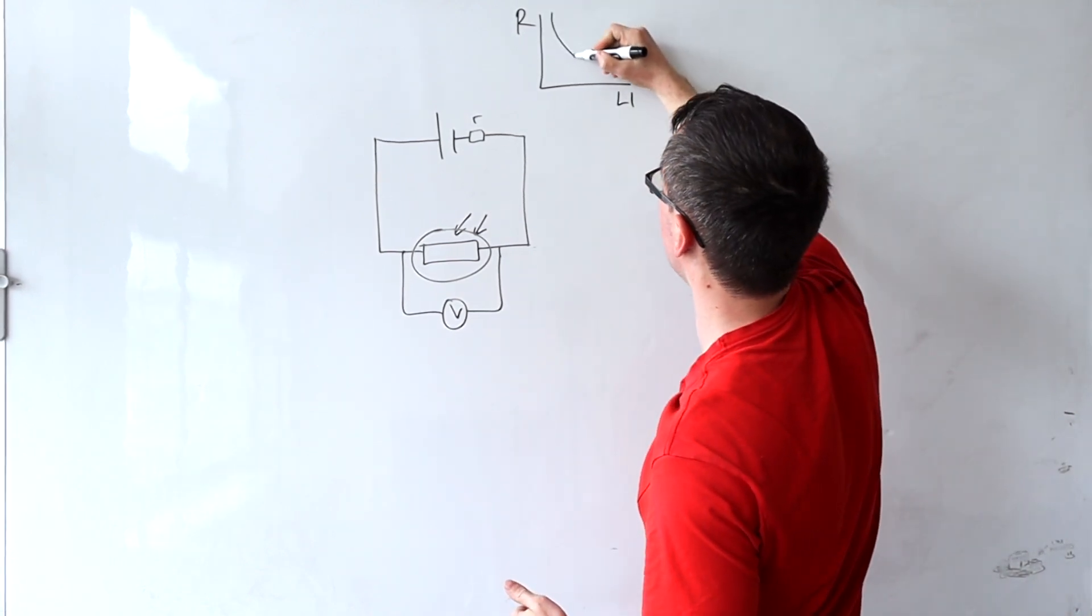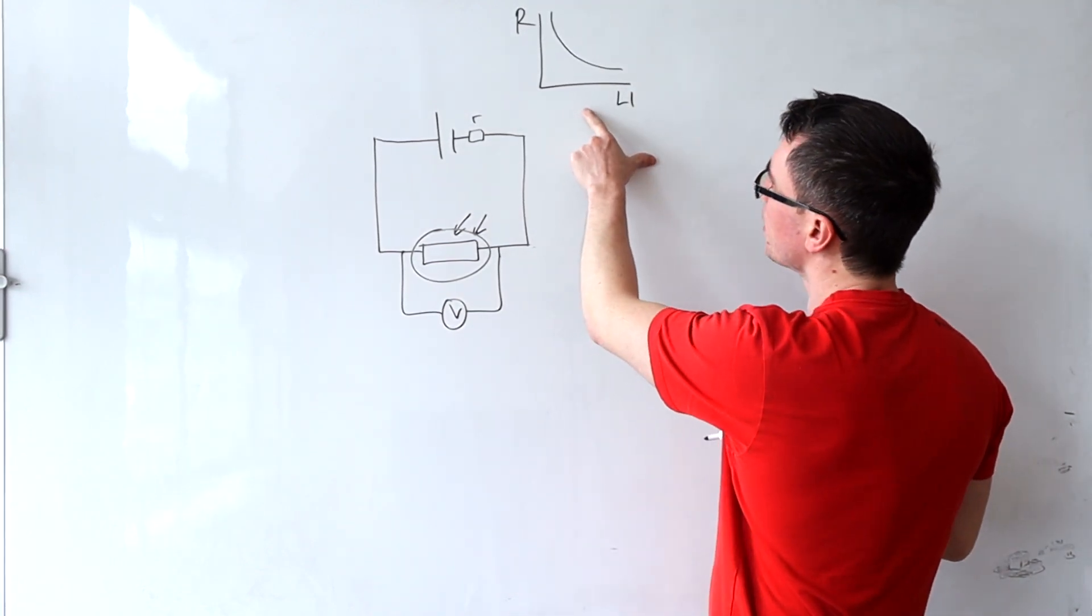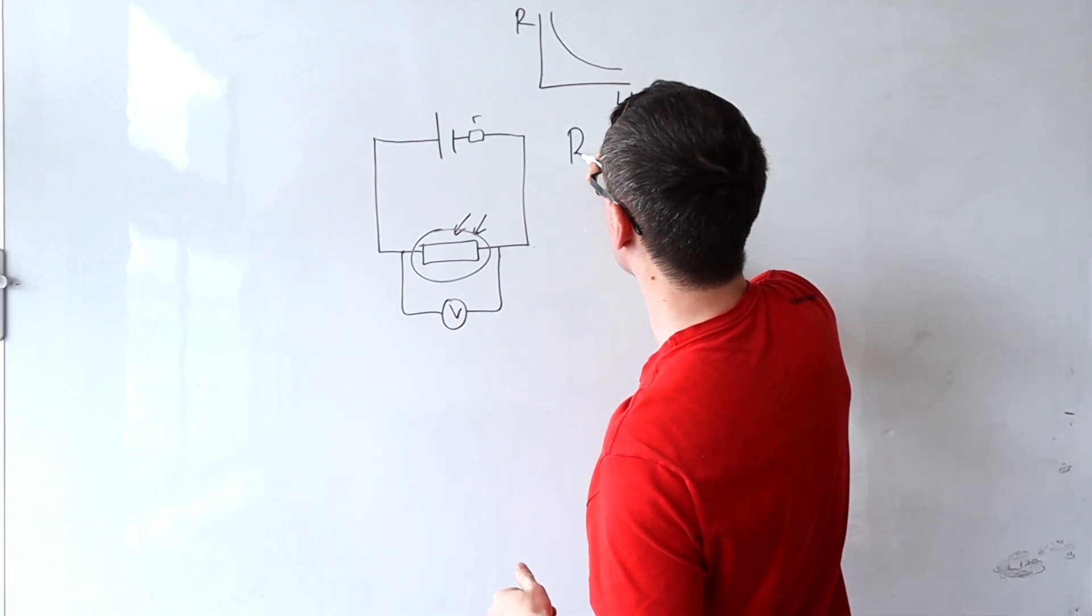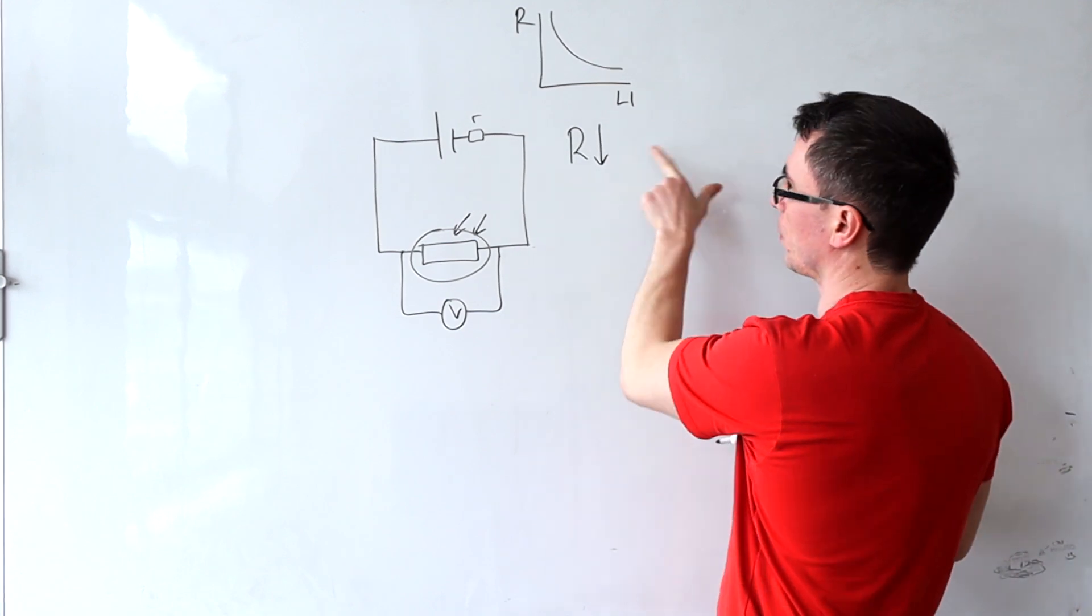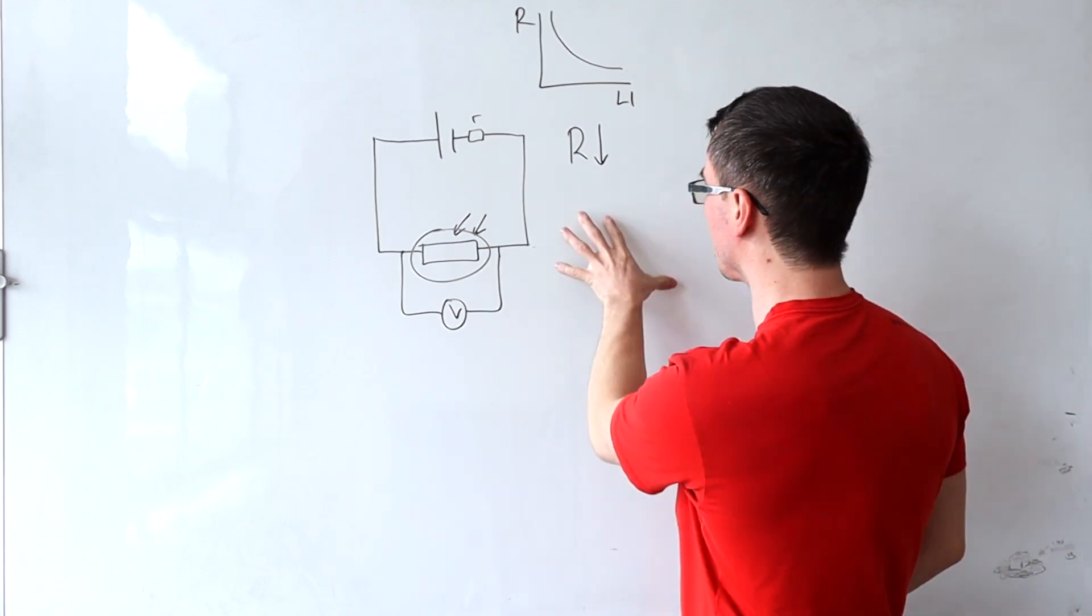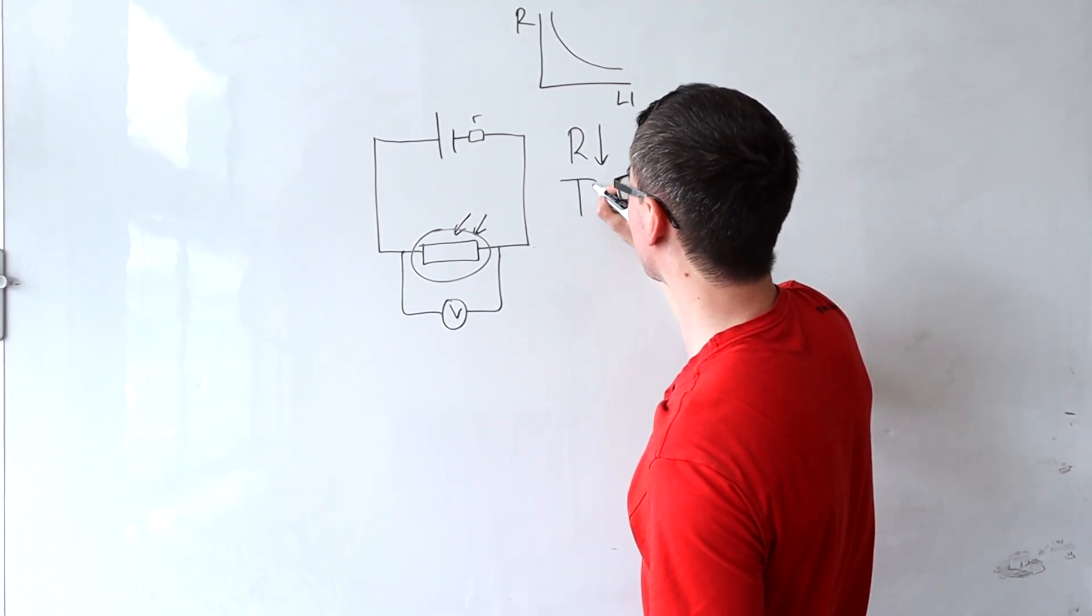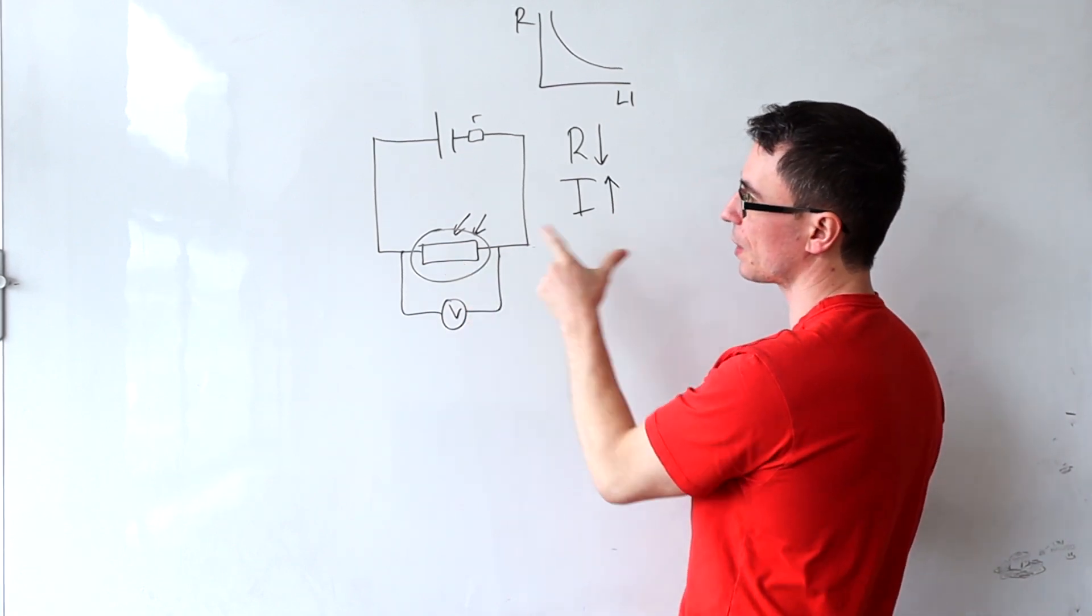The resistance against light intensity for an LDR has a shape kind of like this, meaning that the resistance in the circuit must have gone down. If the total resistance in the circuit has decreased, this means that the current in the circuit must have increased.